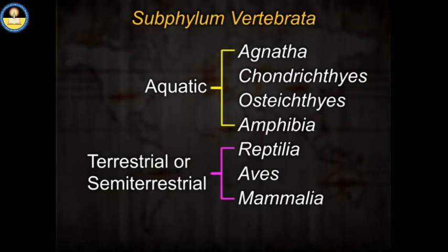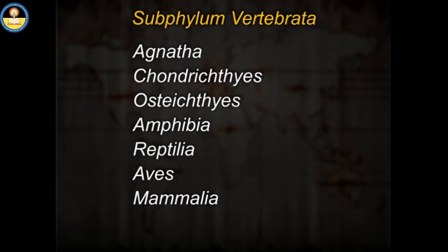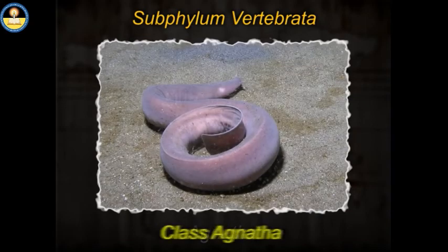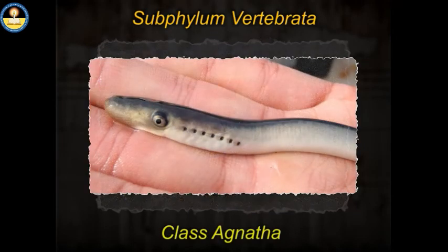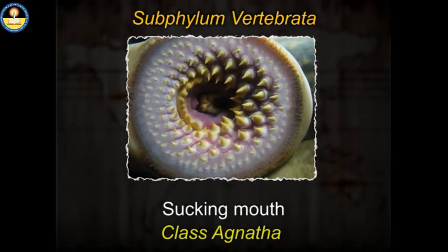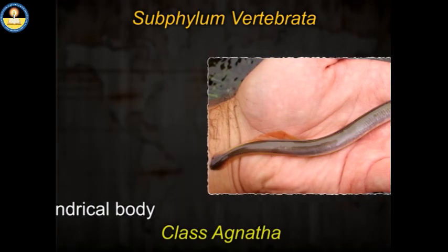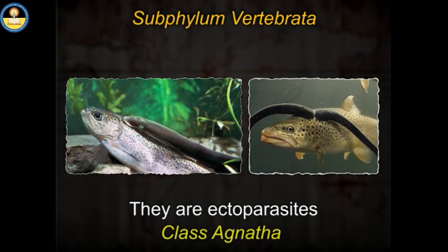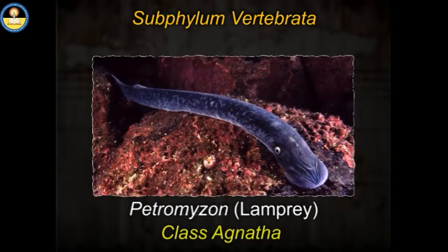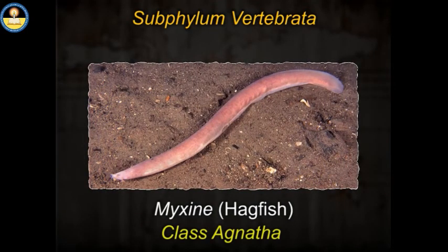Out of seven classes of vertebrates, three classes are of fishes. The most primitive of these is Agnatha. It consists of jawless fish that do not have scales. These vertebrates possess a circular mouth which is of sucking type and have a cylindrical eel-like body. They feed on the blood of other fish, usually a shark; hence they are ectoparasites. Examples: Petromyzon (lamprey) and Myxine (hagfish).